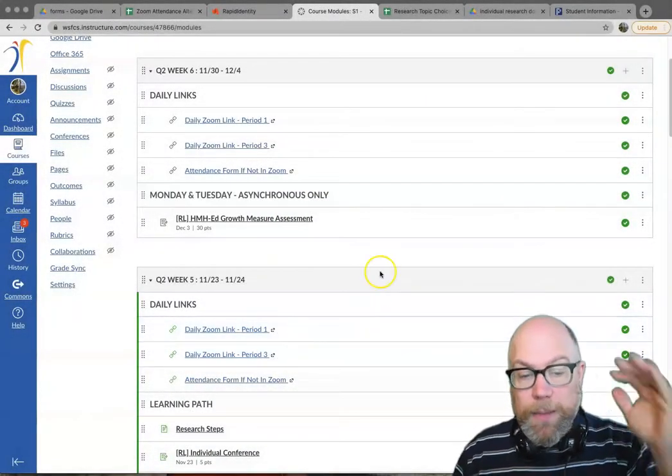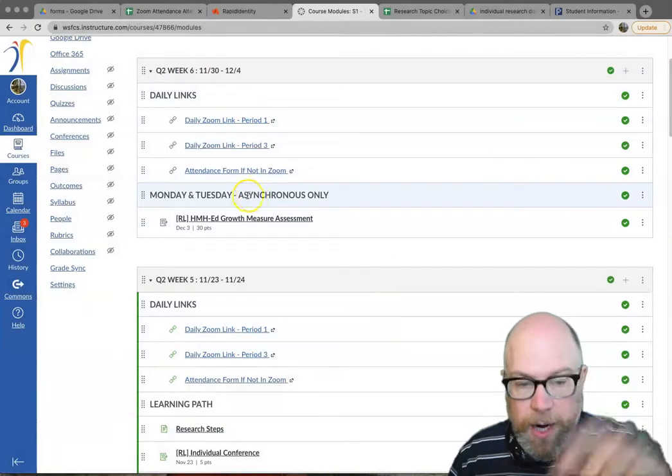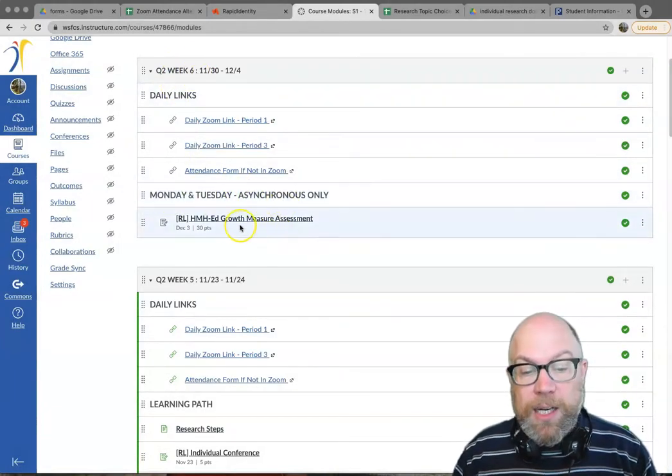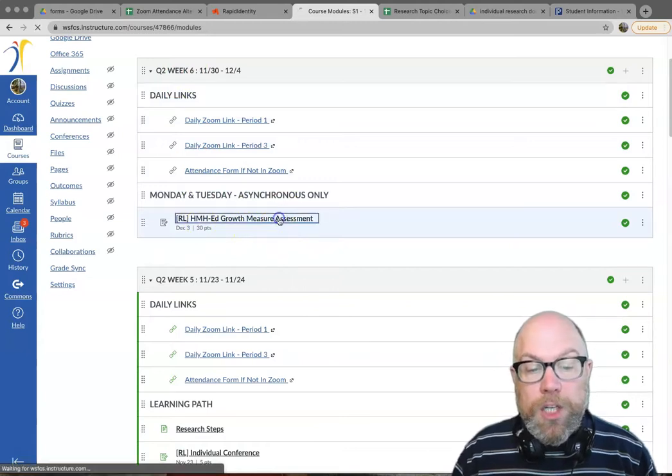So let me get myself out of the way. So in the modules, there might be some extra stuff, but it'll look like this. I'm still building it right now. But on week six, you will see under Monday, Tuesday, asynchronous, the HMH growth measure assessment.